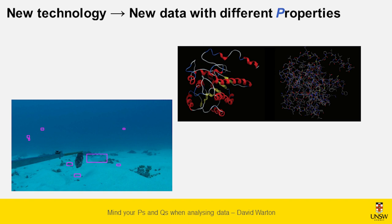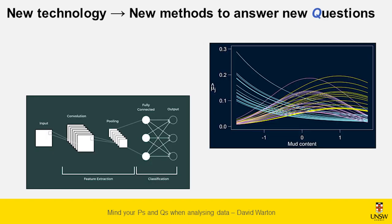Technology has changed things in two main ways. New technology gives us new types of data to analyze, which may have different properties to what we've come across before — which means you need new methods to analyze them. In Mike's talk earlier we saw drone footage with infrared cameras looking at koalas — that sort of data wasn't available when any of us were in high school. New technology also changes the whole landscape in terms of what you can do with data, so new data means new methods, maybe to answer old questions better, maybe to answer new types of questions.